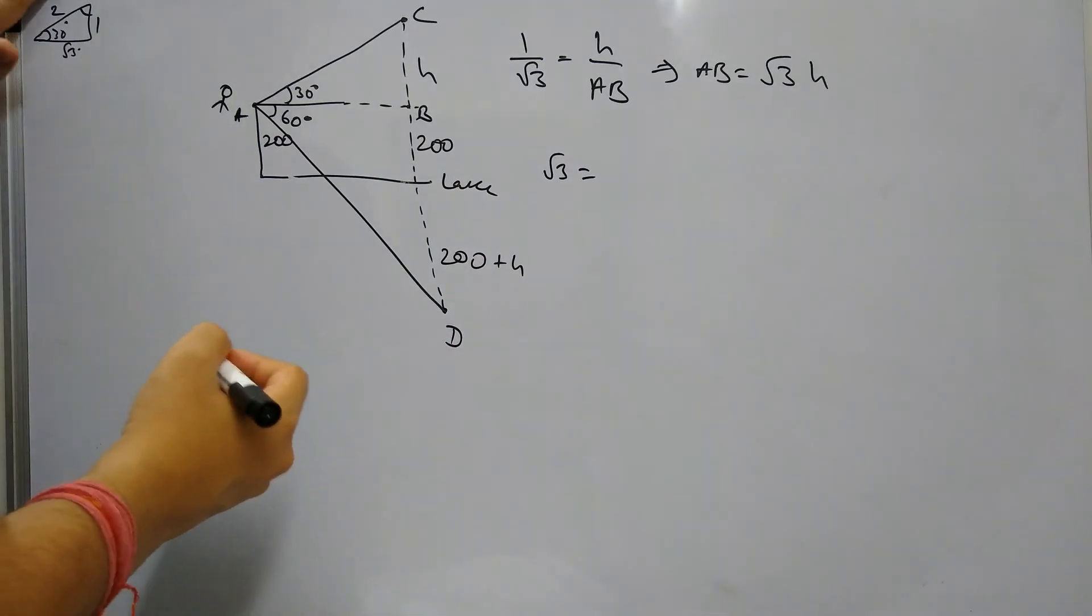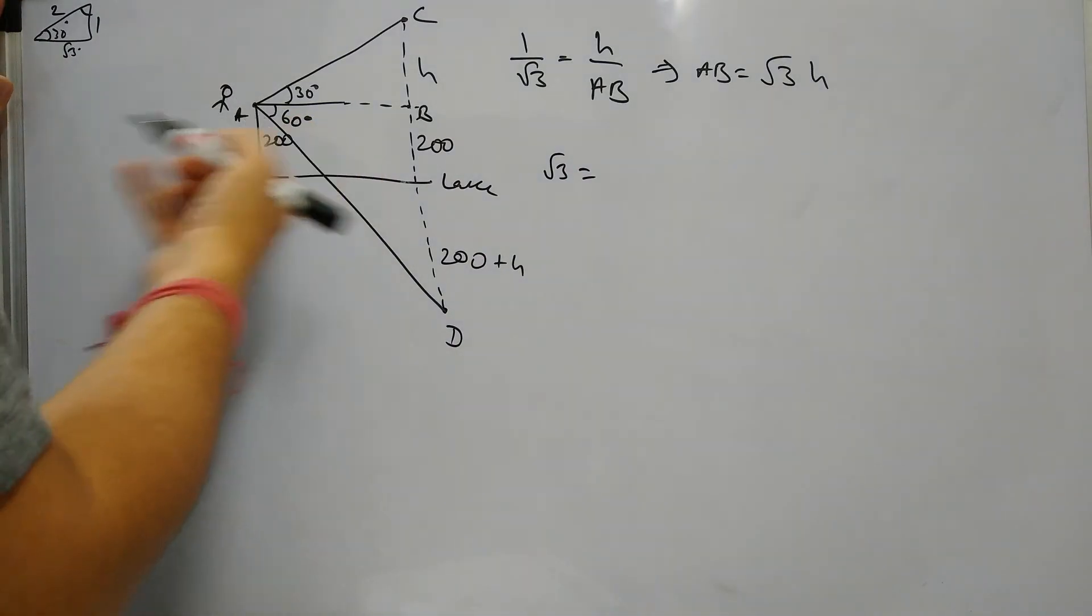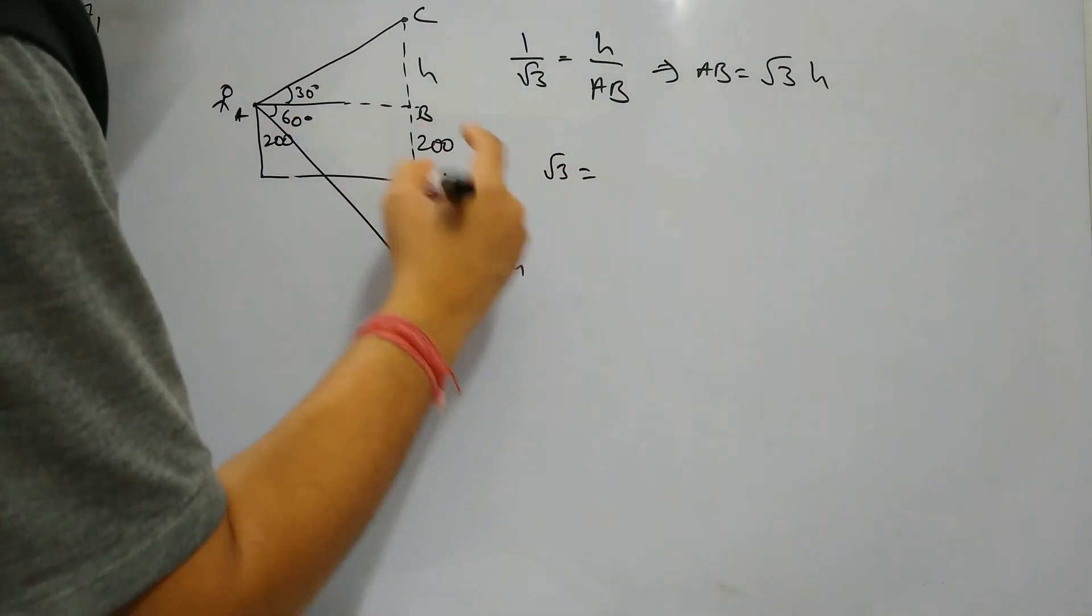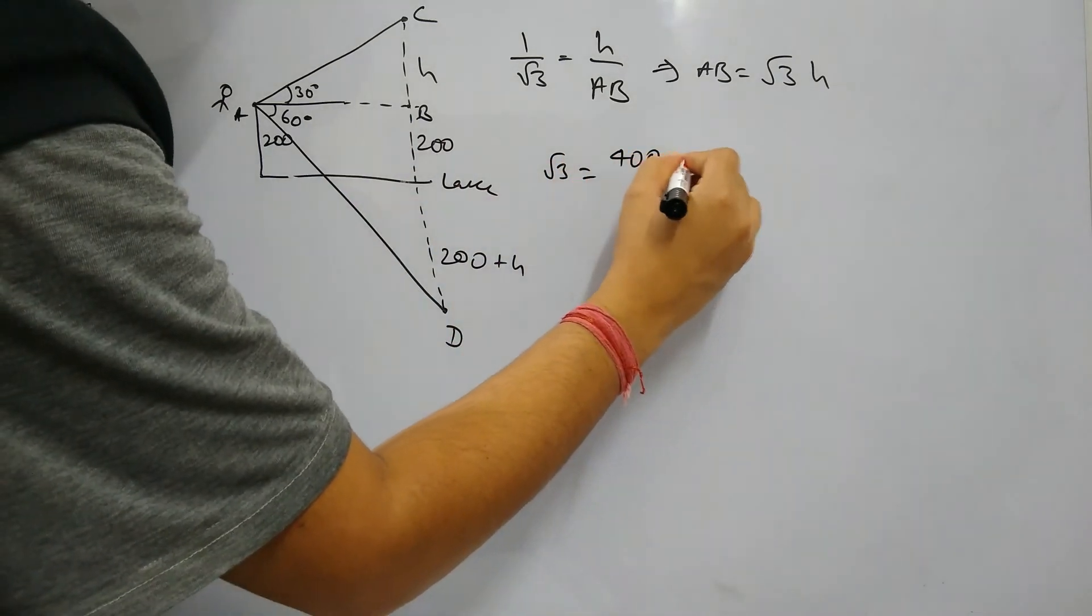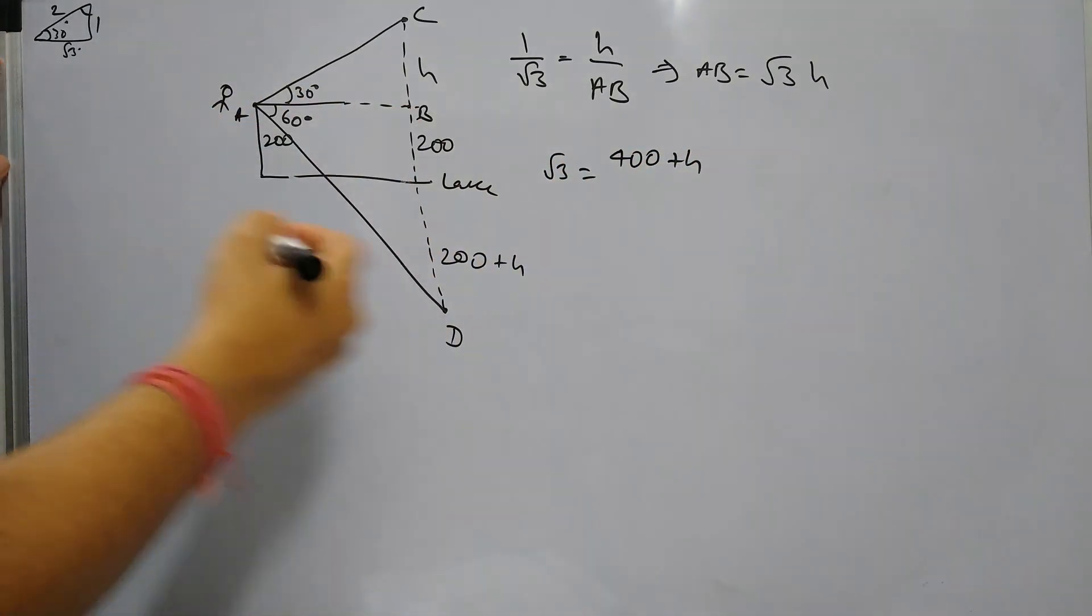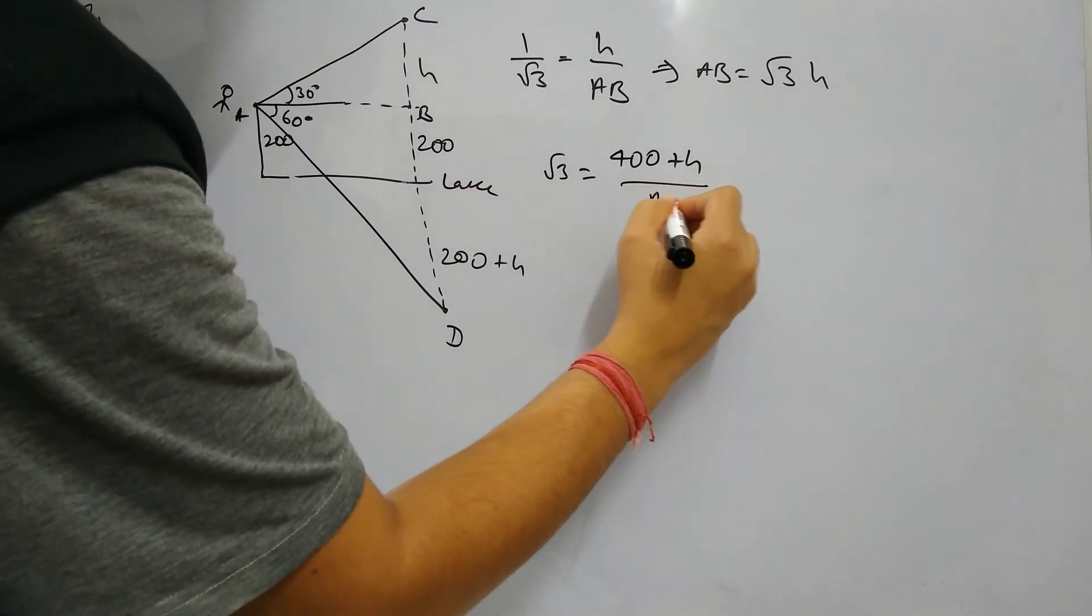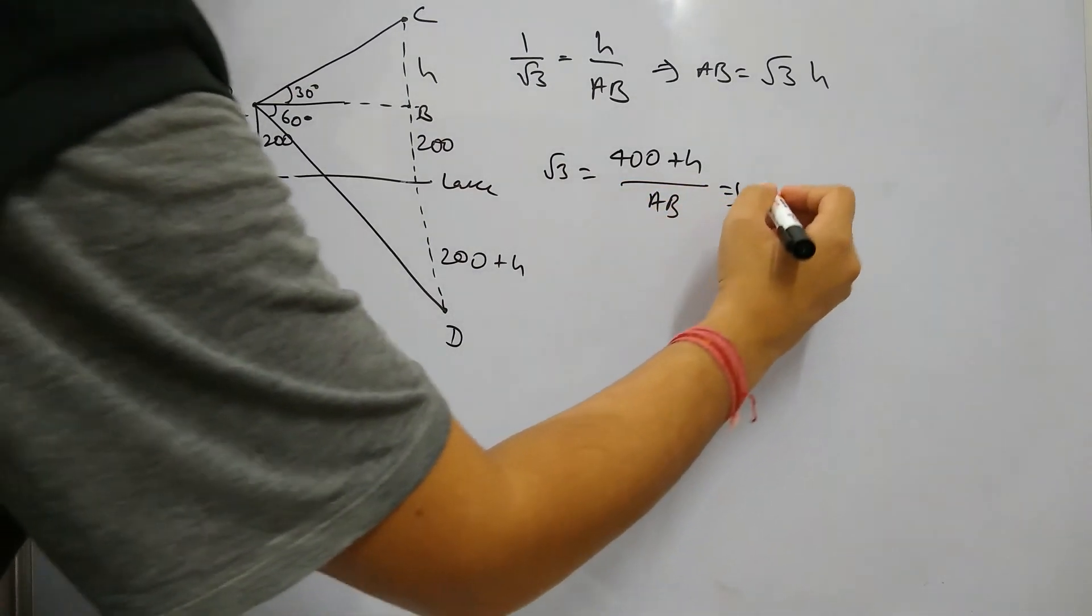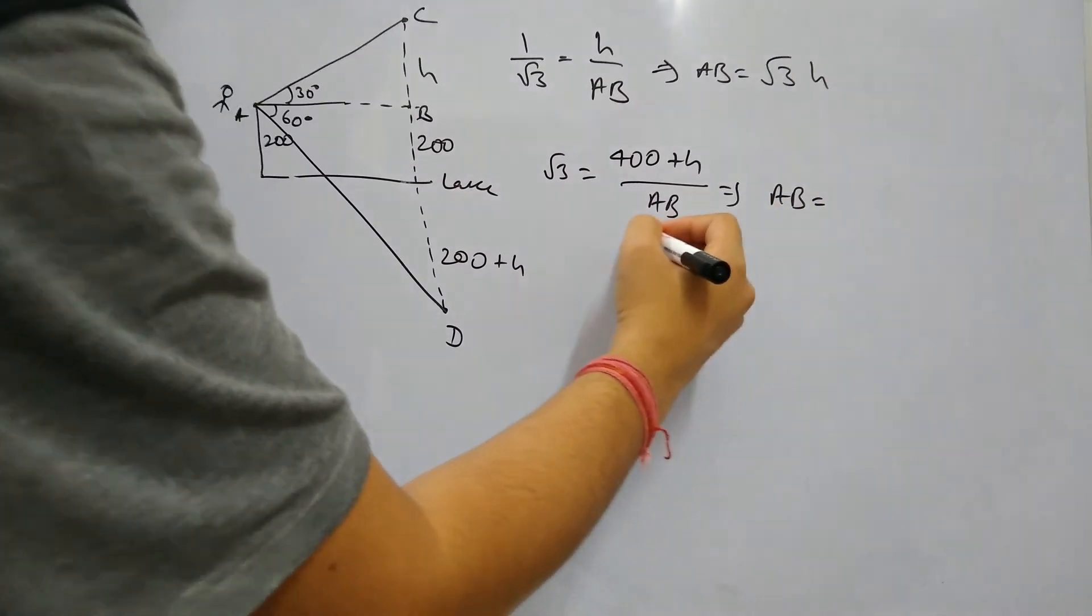So root 3 equals BD by AB. BD is 400 plus h, and AB is... so from here, AB is...